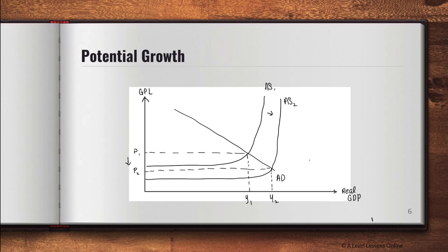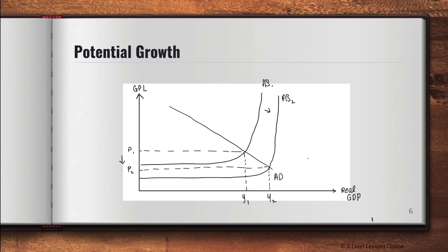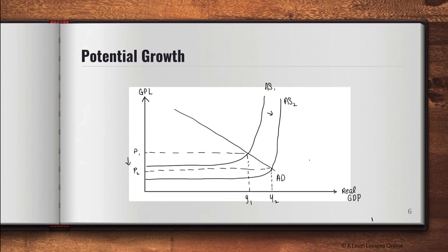The price level has actually fallen, which is a good thing — it means the economy is achieving a low and stable rate of inflation. There's also a rise in national output from Y1 to Y2, which is beneficial. So Y1 to Y2 represents a rise in long-run national output, denoted by the AS curve shifting parallel outwards — meaning there's a rise in productive capacity and the economy faces long-run economic growth, i.e., potential growth.